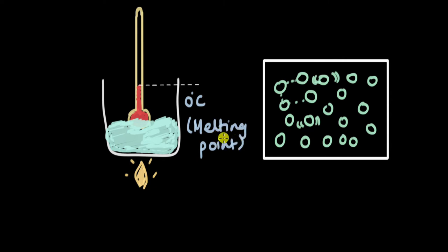Melting point is the minimum temperature at which a solid starts changing into liquid. If the melting point is higher — say 50 degrees Celsius for some substance — it means it has a stronger force of attraction between its particles and needs more energy to break them. For ice, the melting point is zero degrees Celsius.